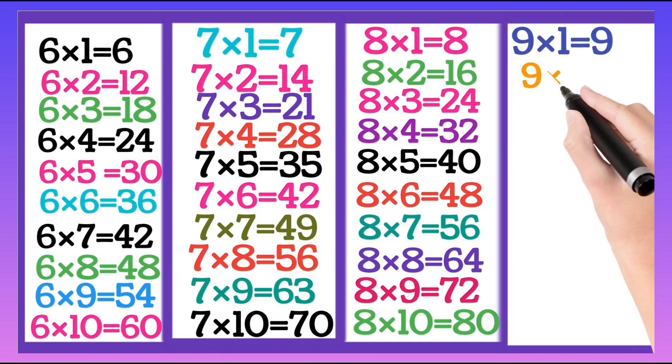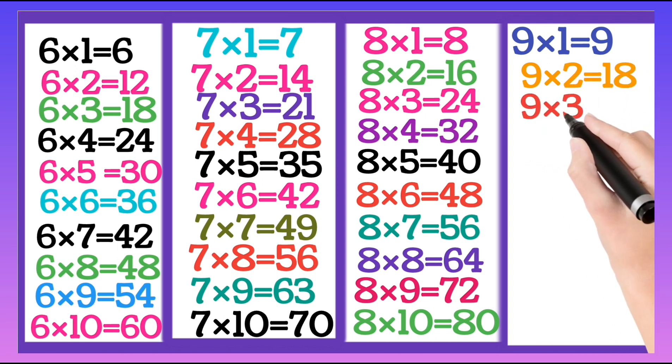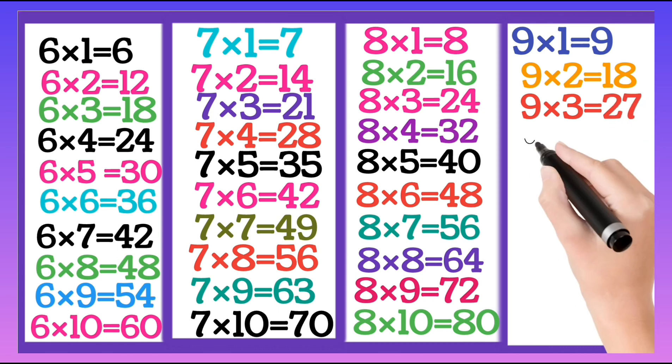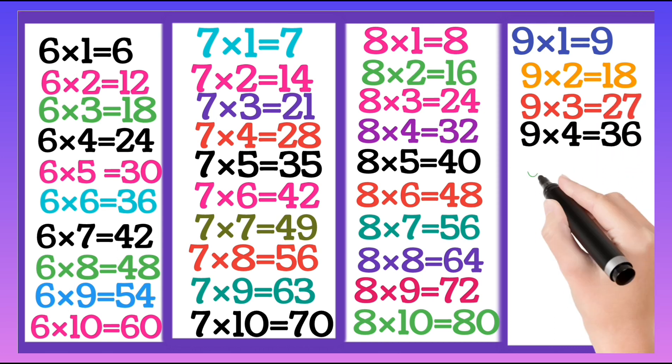9 ones are 9, 9 twos are 18, 9 threes are 27, 9 fours are 36.